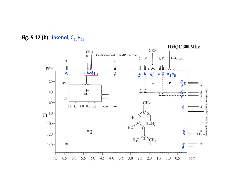We can then look at protons C and E, and it is now apparent that those are correlated with carbon C. This carbon is also bonded to two protons. Continuing our analysis, proton F, which is between 3.5 and 4 parts per million, correlates with carbon E, which is at about 70 parts per million.